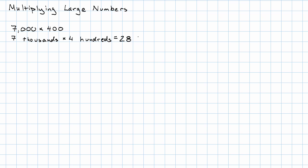Thousands times hundreds is hundred thousands. Oh, that's 28 hundred thousands or 2,800,000. I just put this last digit in the hundred thousands place.